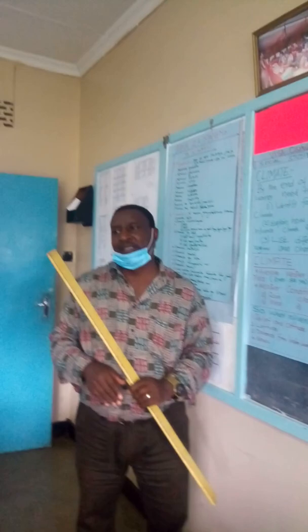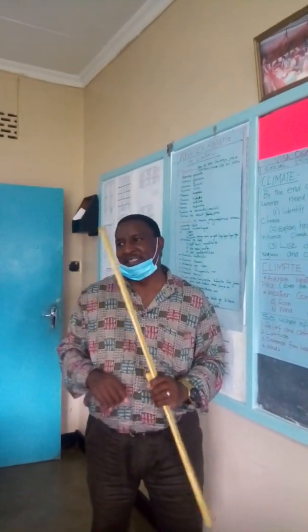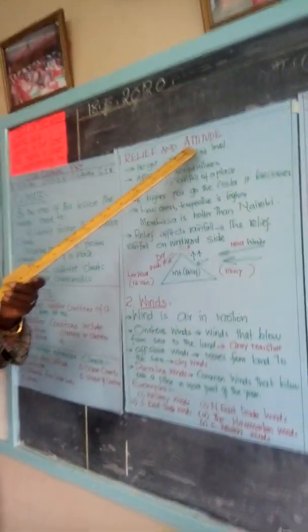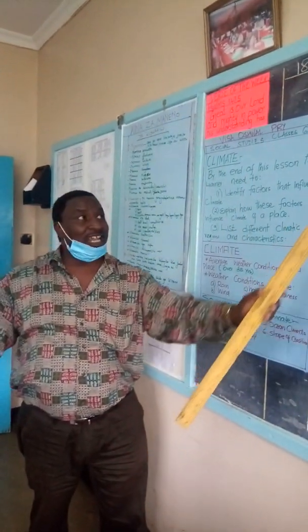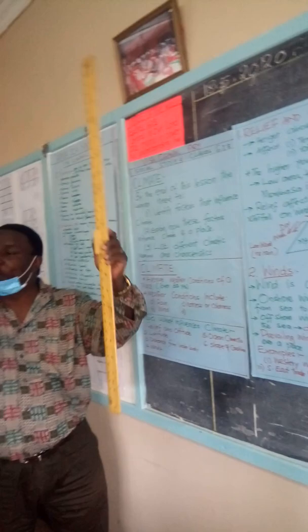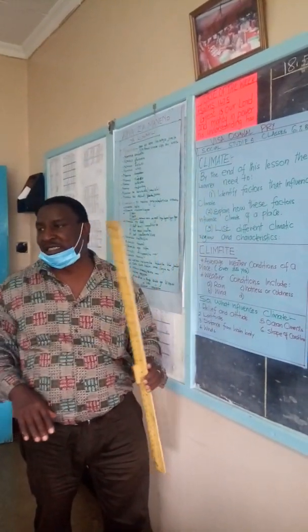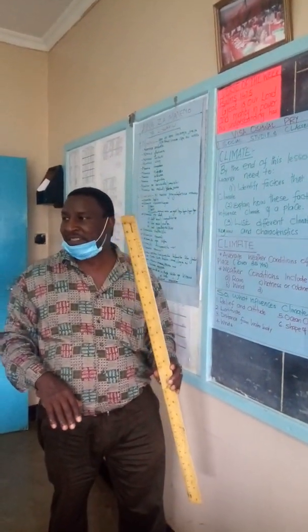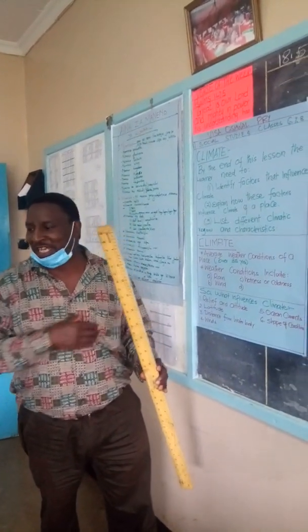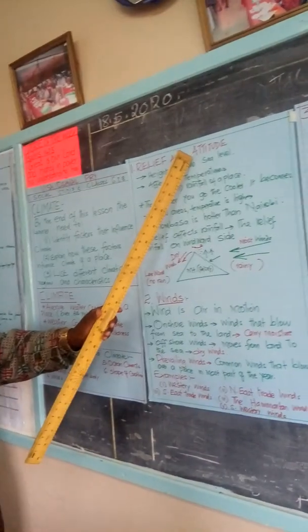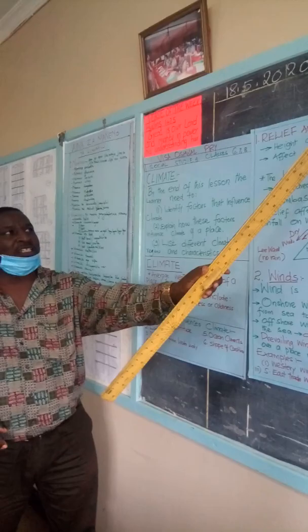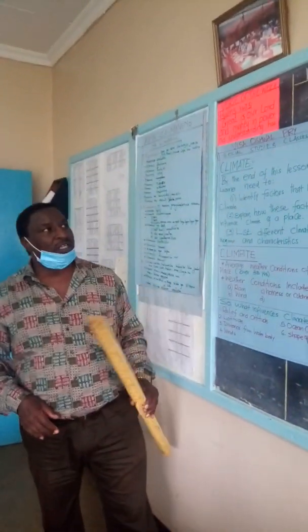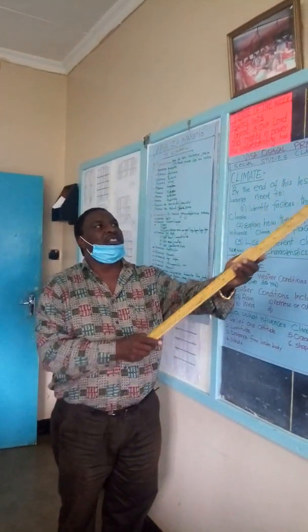A student asks whether relief and altitude are the same thing. The teacher clarifies: altitude is height above sea level, while relief refers to that height in terms of physical features like mountains. The teacher also makes an important correction — the word used should be 'altitude,' not 'attitude.' Attitude refers to a person's mindset, positive or negative. The correct geographical term is altitude, spelled with an 'L'.